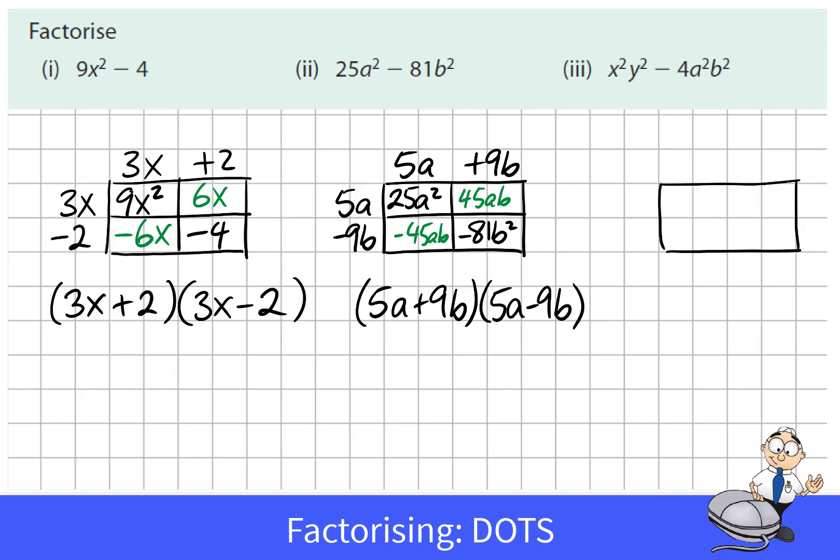Again we know it's the difference of two squares. We have two squares being one subtracted from the other. In the top corner we put the first term x squared y squared. In the opposite corner of the diagonal we put minus 4a squared b squared. When we factorize x squared y squared it's xy multiplied by xy.